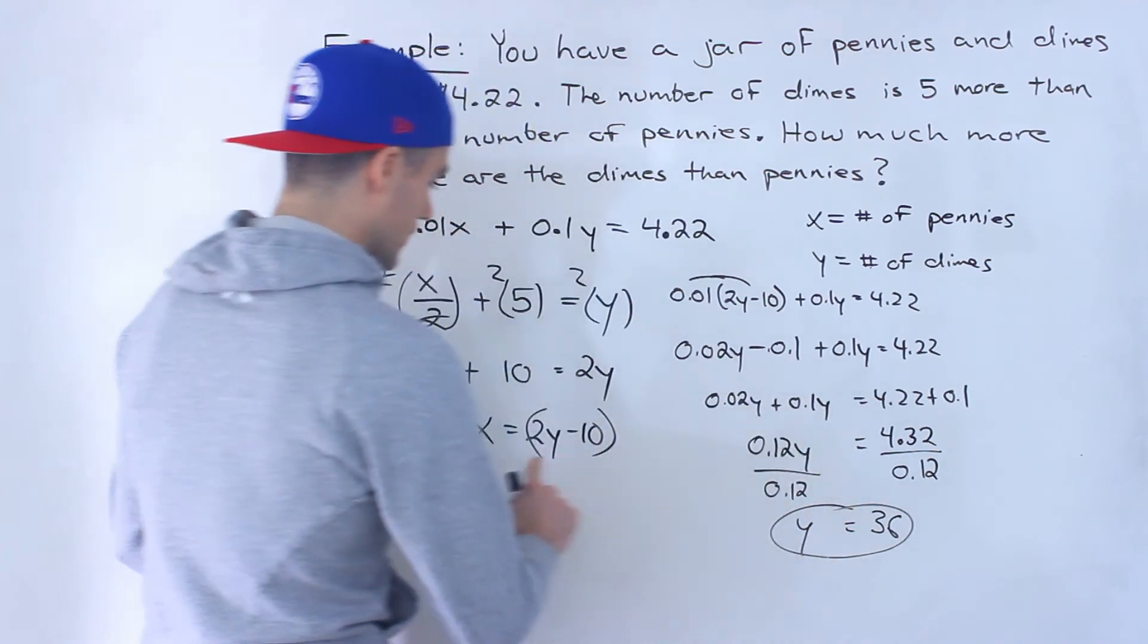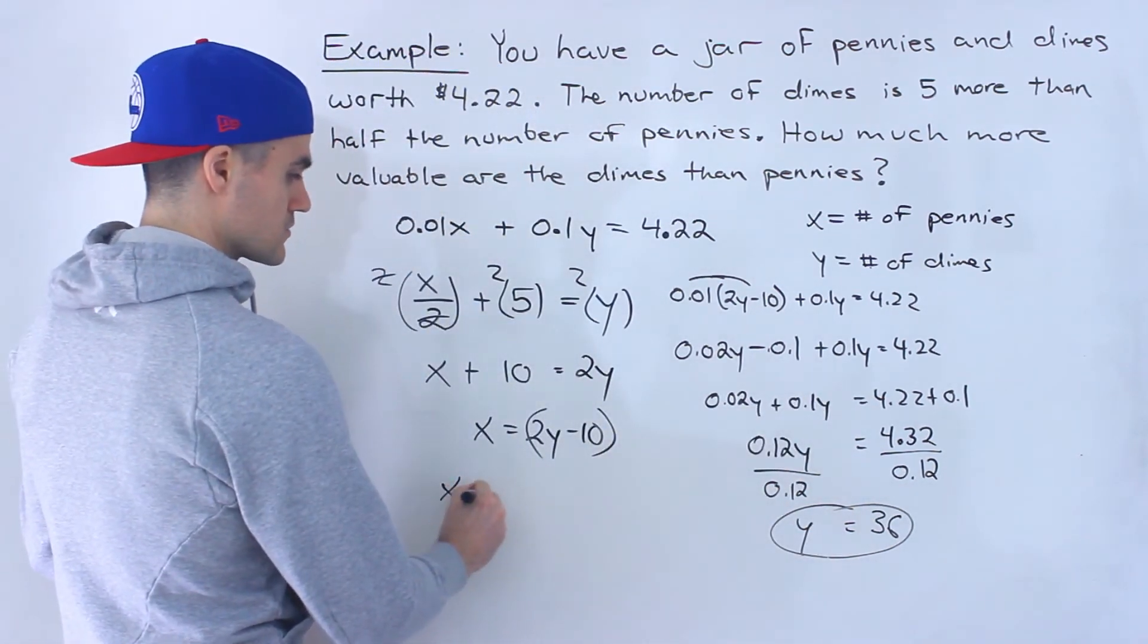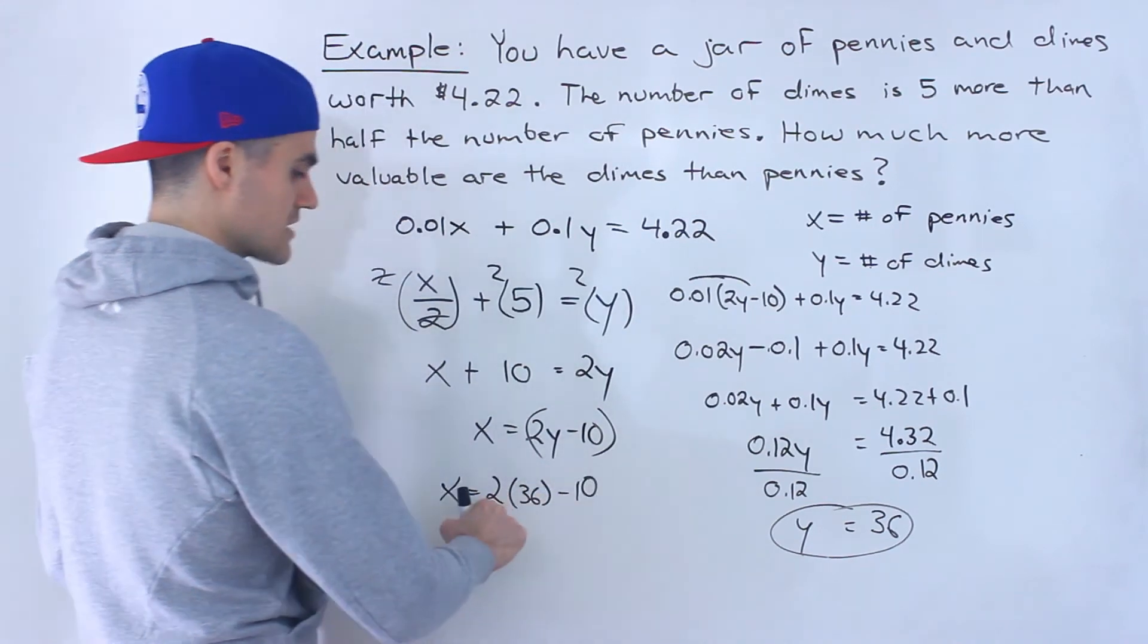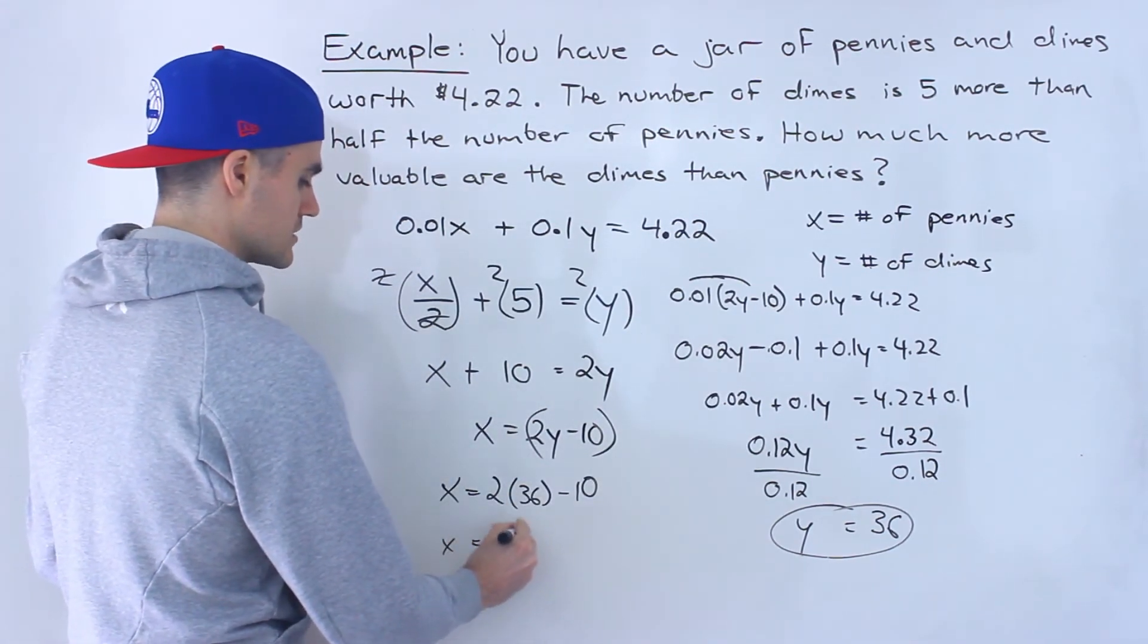So this is the number of dimes, and then to get the number of pennies we could just plug it in here. So x would be 2 times 36 minus 10, which would be 72 minus 10, which would give us 62.